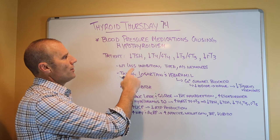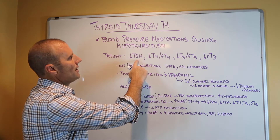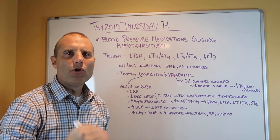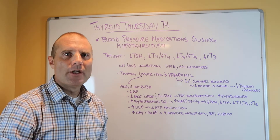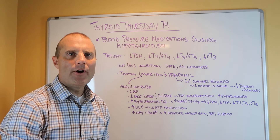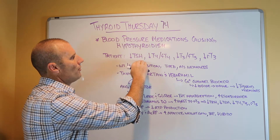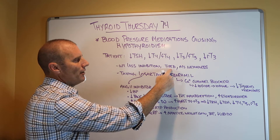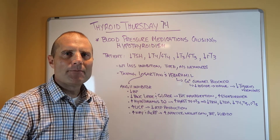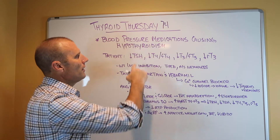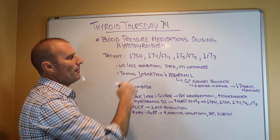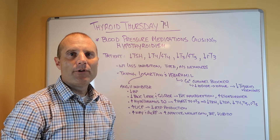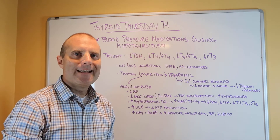This is a patient who just reviewed her blood work, and her TSH, T4, free T4, T3, free T3, and reverse T3 were all low normal — all below the optimal range and all close to lab low. She's struggling with weight loss inhibition, she's tired, she's got muscle weakness, and she's got lots of symptoms of hypothyroidism. But if you looked at her labs, especially from a traditional standard of just looking at TSH, they would say her thyroid physiology is working fine — but it's not, and here's why.